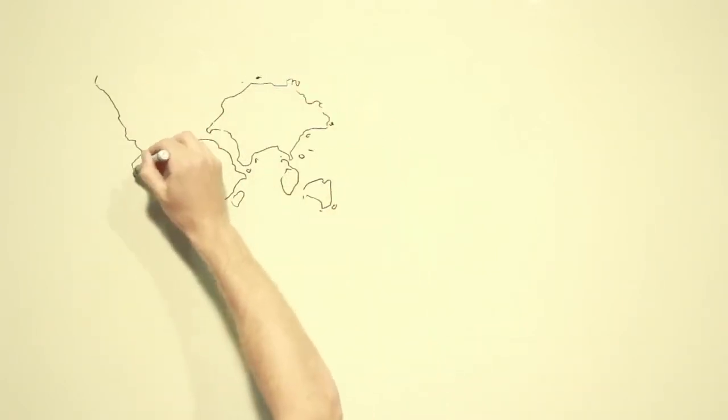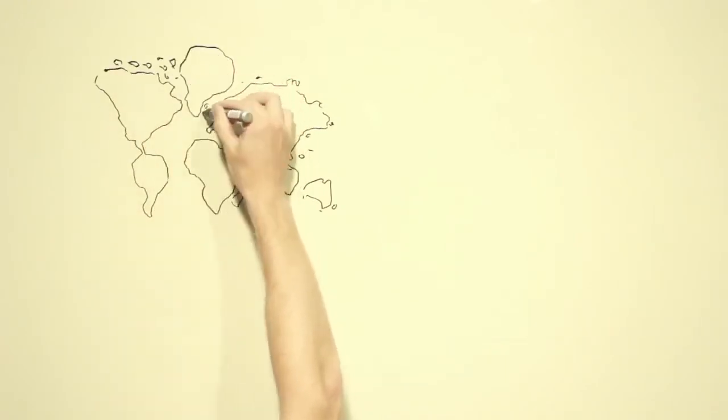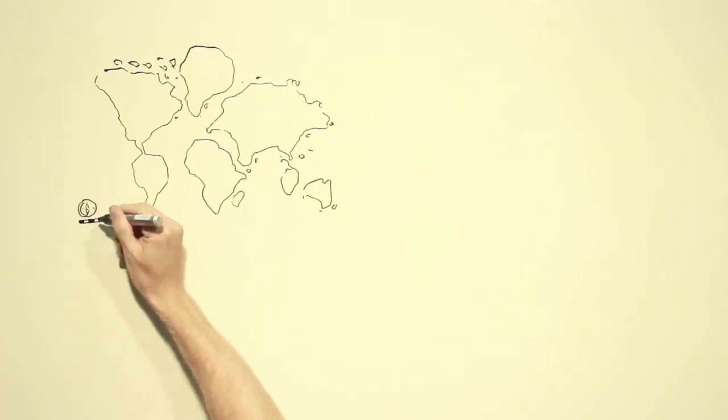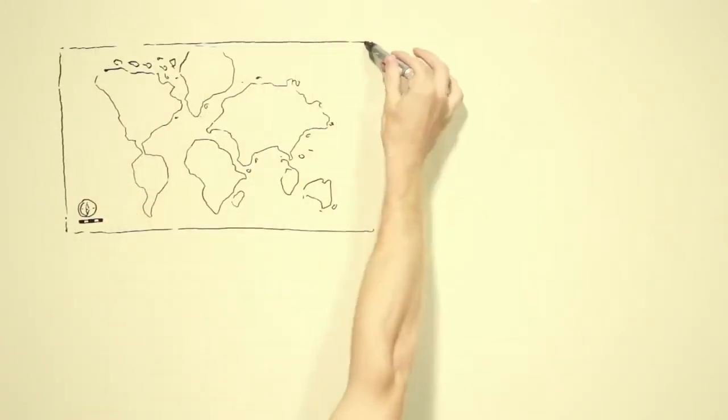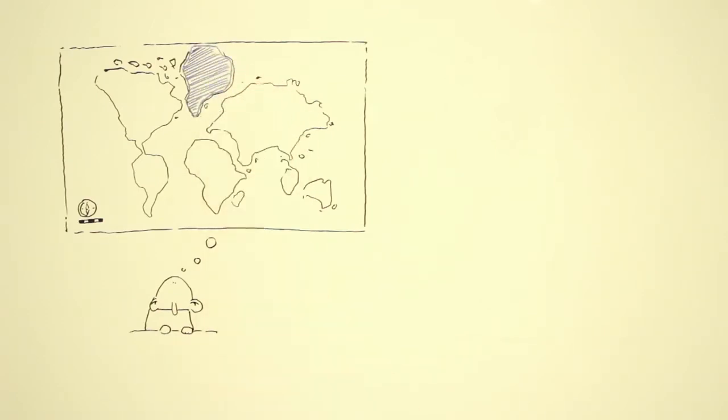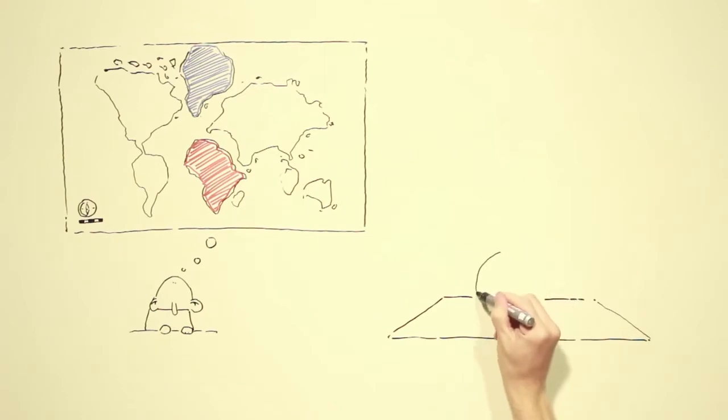Without thinking, we assume that maps display the world as it is, just because they contain a compass or a scale or were produced by some experts. For example, a lot of people believe that Greenland is as big as Africa, since many maps display these two areas equally sized.